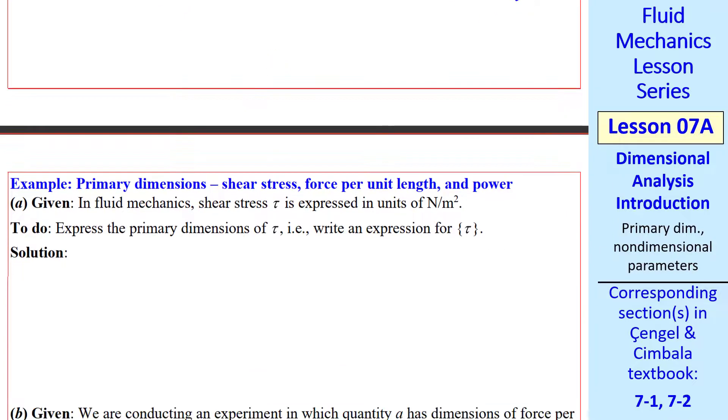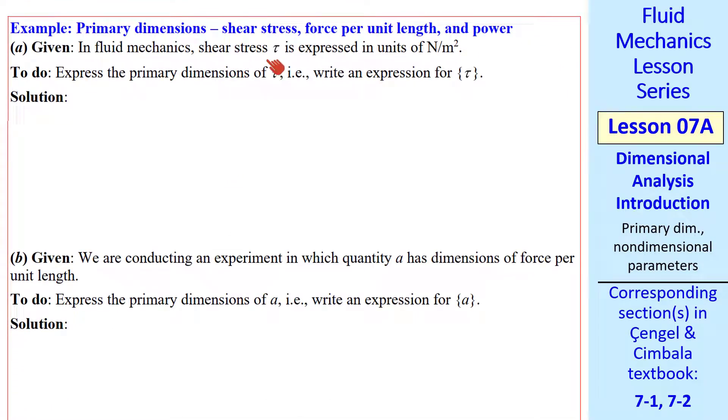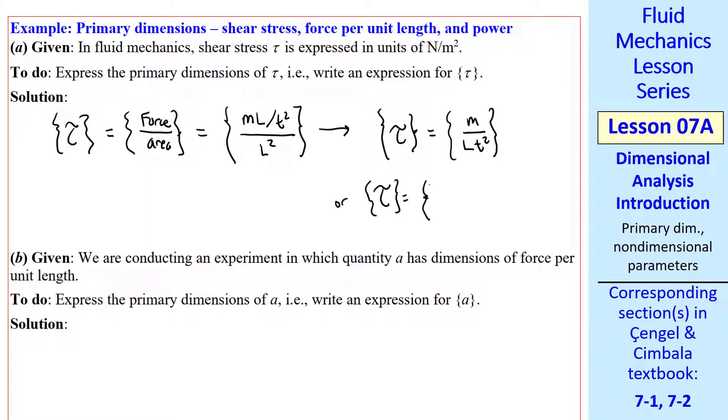Let's do some other examples of expressing primary dimensions. We discussed shear stress previously. It has units of Newton per meter squared. Let's express the primary dimensions of tau. The dimensions of tau are the dimensions of force per area. Since Newton is force and meter squared is area, we just showed that force has primary dimensions of ML over t squared. Area has primary dimensions of L squared. So the primary dimensions of tau are M over Lt squared. For later algebra, it's good to get in the habit of writing it this way. The primary dimensions of tau are M to exponent 1, L to exponent negative 1, and t to exponent negative 2, which is the same as this. But we'll find this easier to manipulate later on. Either of these is acceptable as an answer.